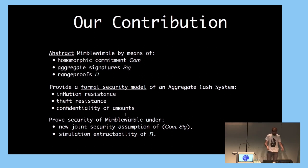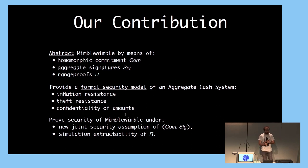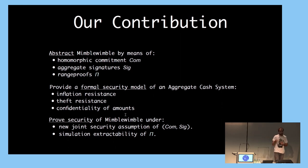So what did we do? We took MimbleWimble, abstracted away the notion of homomorphic commitments, simulation-extractable non-interactive zero-knowledge proofs and arguments, and aggregate signatures. We provide security notions describing the properties we want from MimbleWimble: it is not possible to spend more money than available in the system; it is not possible to steal money from honest users; and the amounts are hidden. We prove the security of MimbleWimble, requiring new security assumptions of compatibility between the signature scheme and the commitment scheme.